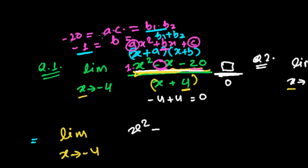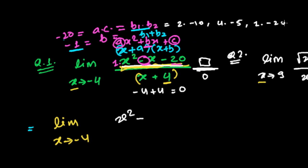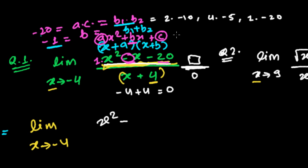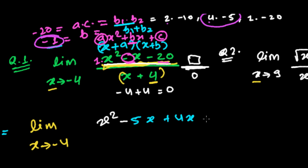-20 can be written as 2×(-10), 4×(-5), or 1×(-20). Checking: 2 + (-10) = -8, but 4 + (-5) = -1, which matches our required middle term. So the two numbers are 4 and -5. We rewrite the numerator as x² - 5x + 4x - 20, divided by (x + 4).